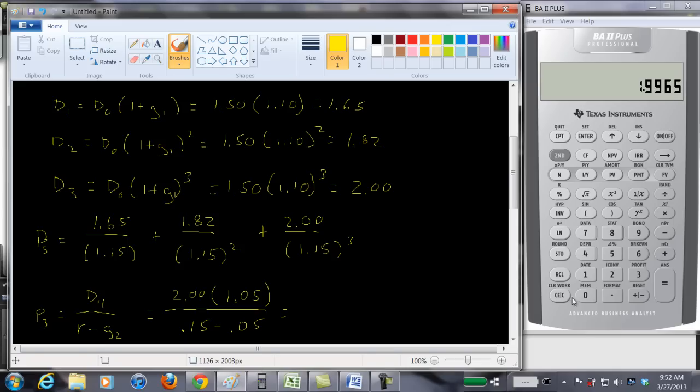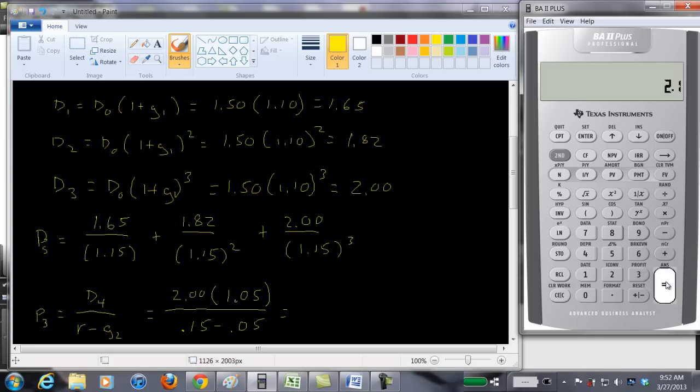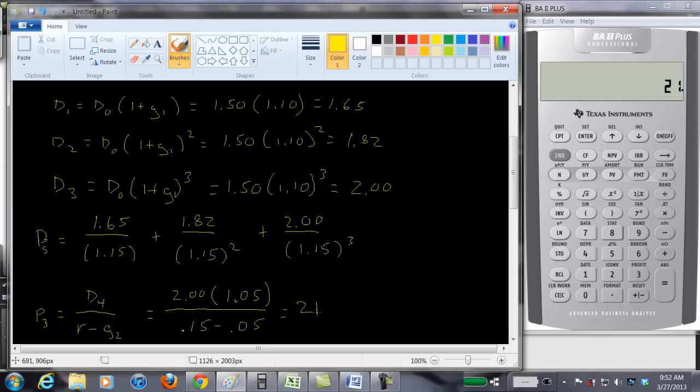Alright, let's see what we get here. We're going to have 1.05 times 2. So we get $2.10. And .15 minus .05 is .1. So let's divide by .1. So we get the price of the stock in year three is $21.